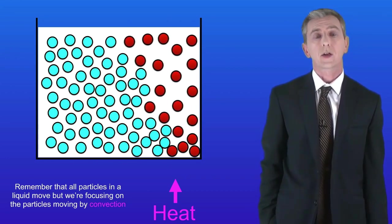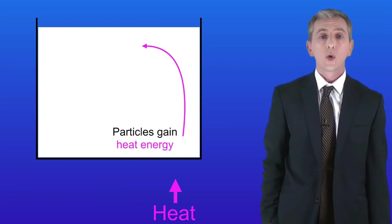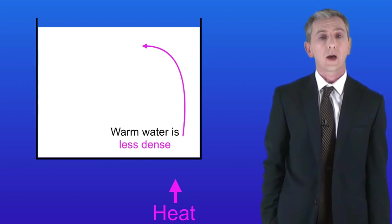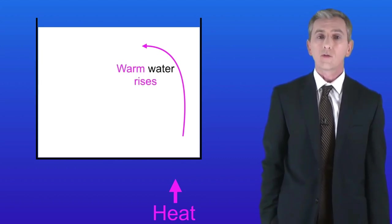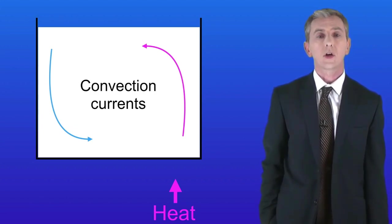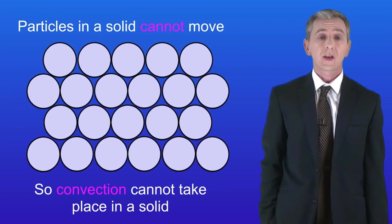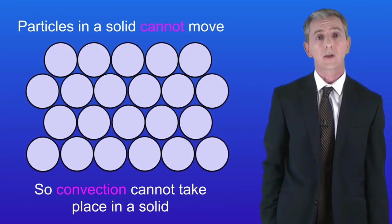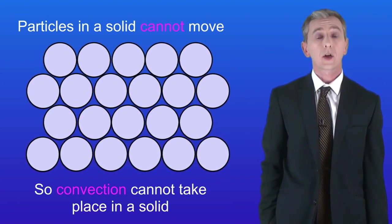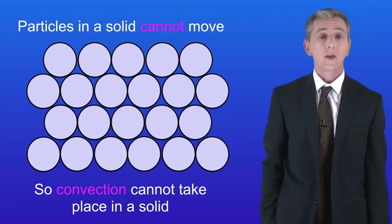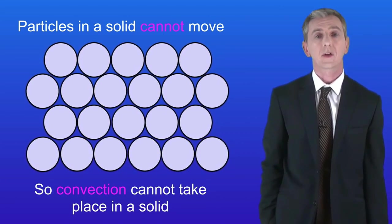You could be asked to explain how convection works. To recap: when we heat the liquid this causes the particles to gain heat energy. The particles now move further apart and this warm water is now less dense. Therefore it rises and cool water sinks to take its place. Scientists call these convection currents. Convection can only happen in liquids and gases. Convection cannot happen in a solid because the particles in a solid cannot move.